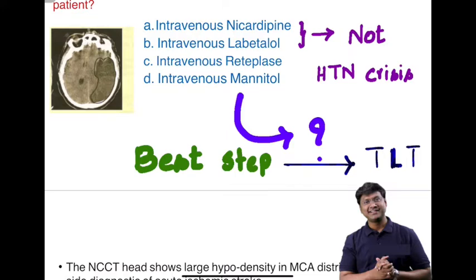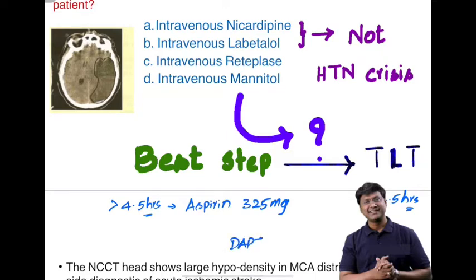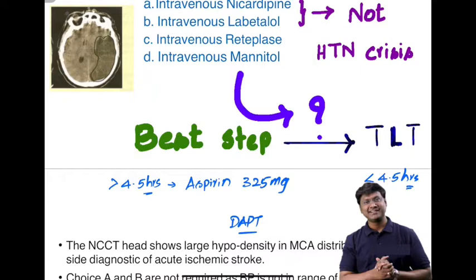Thrombolysis should be done if the patient presents within 4.5 hours of neurological deficit due to ischemic stroke. If the patient presents after 4.5 hours, give antiplatelets — specifically aspirin 325 mg. There is no role for heparin and no role for clopidogrel. Unlike coronary artery disease where dual antiplatelet therapy (aspirin + clopidogrel) is used, in ischemic stroke only single antiplatelet therapy — aspirin — is given.